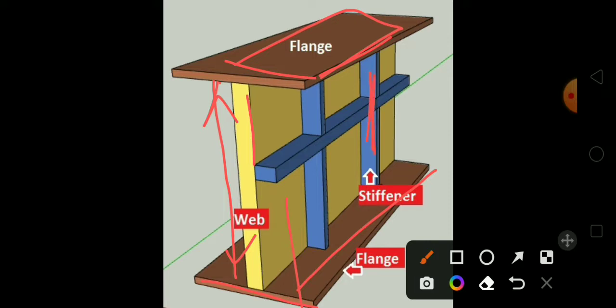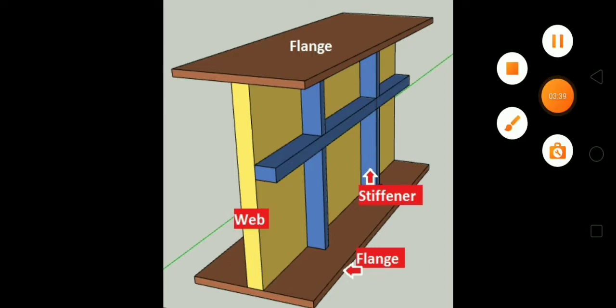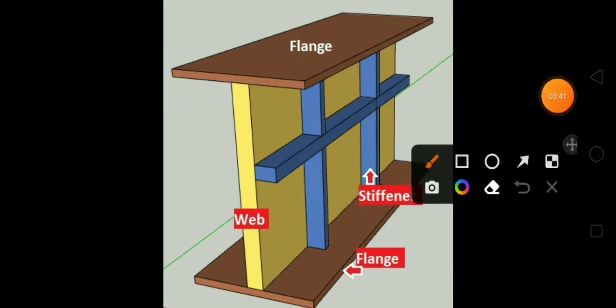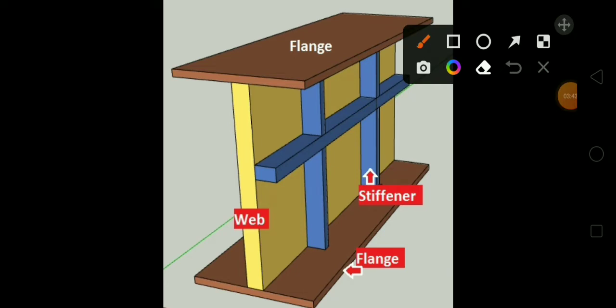And here in between this is the stiffener. You can see here this is a vertical stiffener and this is horizontal stiffener. Okay, so you can see here the different component of plate girder. Okay, and flange, this is the flange which is below. So these are the main component of plate girder: that is flange, stiffener, web.